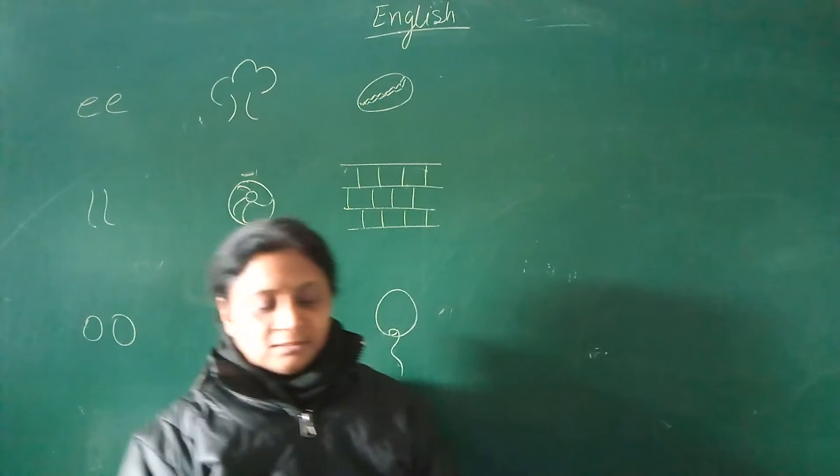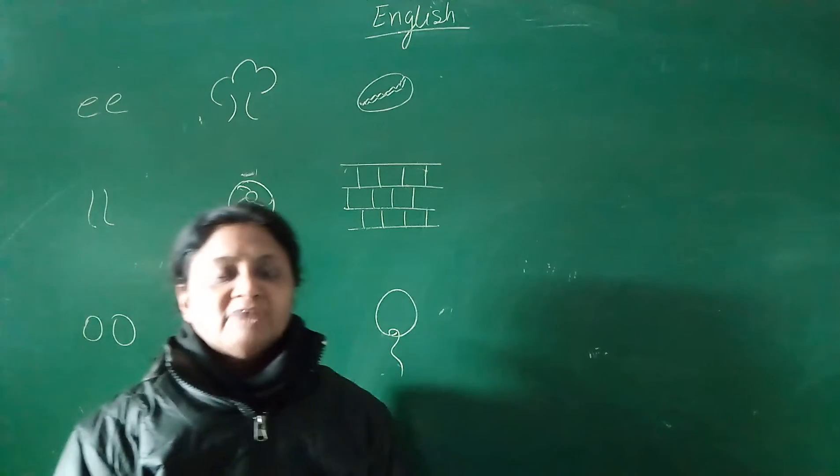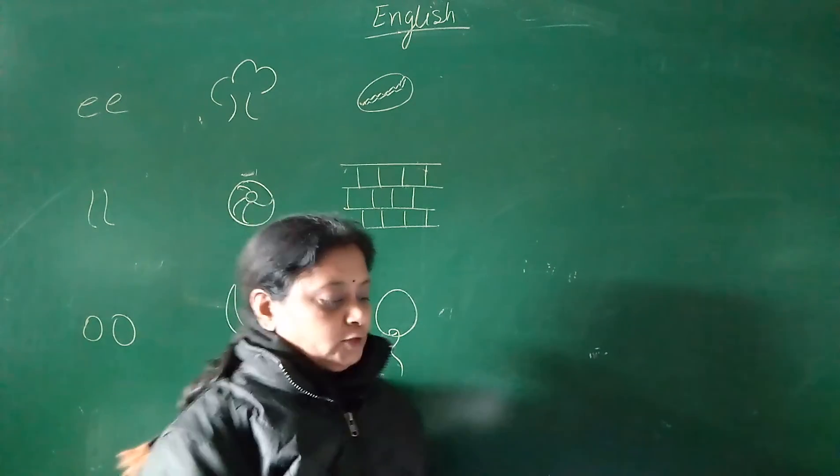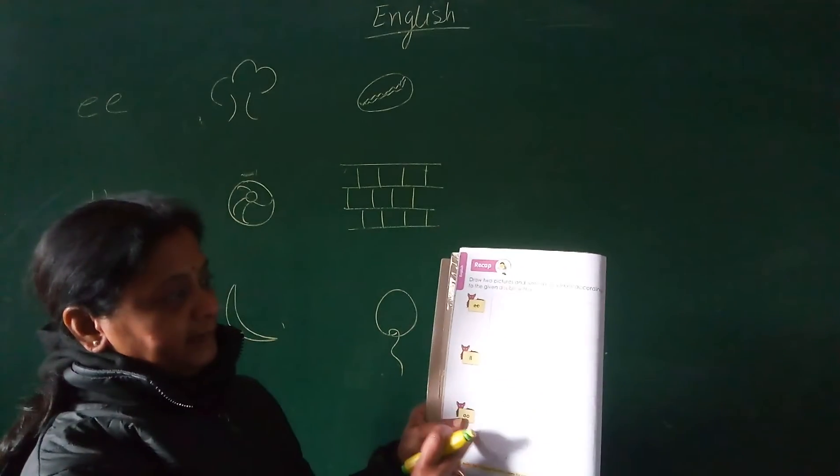And the next page you have double letter words in which you have double E, double O, and double L. You have to make two pictures of each double letter: double E, double L, double O.